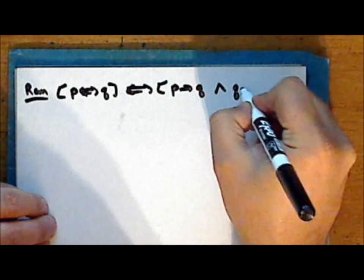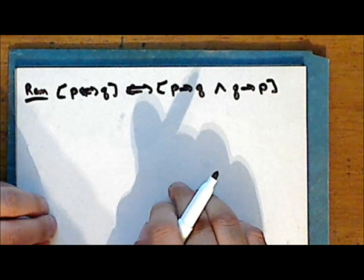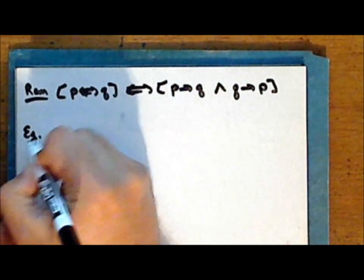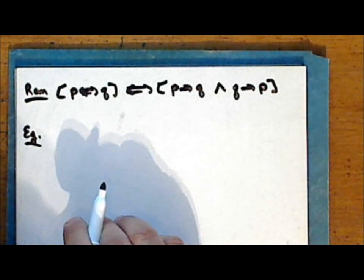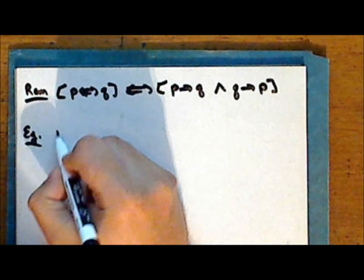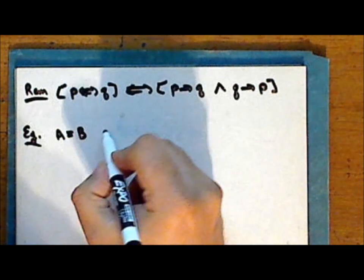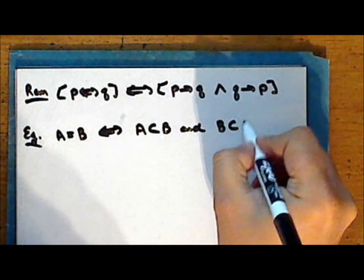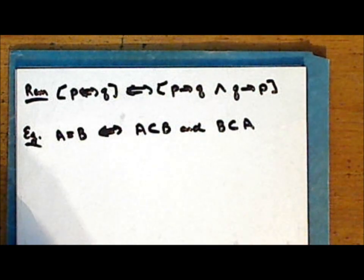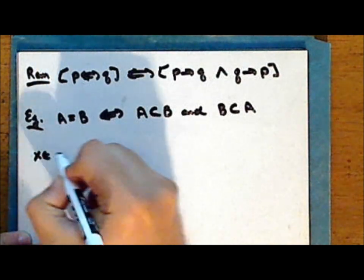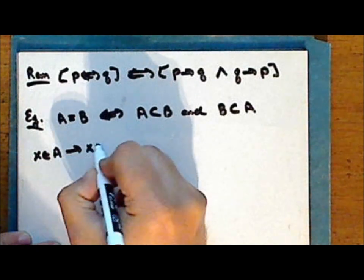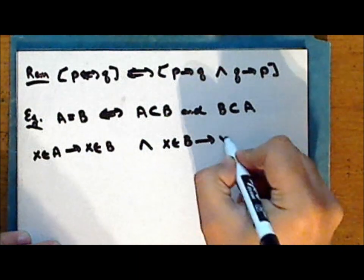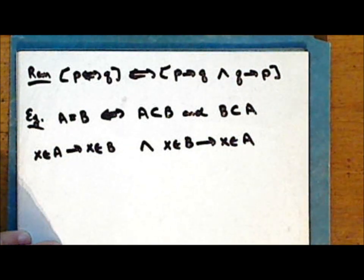To prove a biconditional, we must prove that both the implication and its converse are both true. We have already seen an example of this. In the previous lecture, we proved De Morgan's laws, and each of those laws is a statement of set equality. By definition, the set A is equal to the set B if and only if both A is a subset of B and B is a subset of A. In order to prove this, we had to demonstrate that given an arbitrary element in set A, it implied that same element was in set B, and vice versa. So we did in fact prove a biconditional.